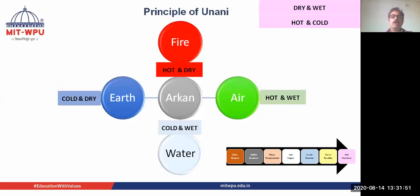Talking about Arkan, there are four elements: fire, air, water, and earth. Each element has two basic qualities — dry or wet, and hot or cold. So fire is hot and dry, air is hot and wet, water is cold and wet, and earth is cold and dry.